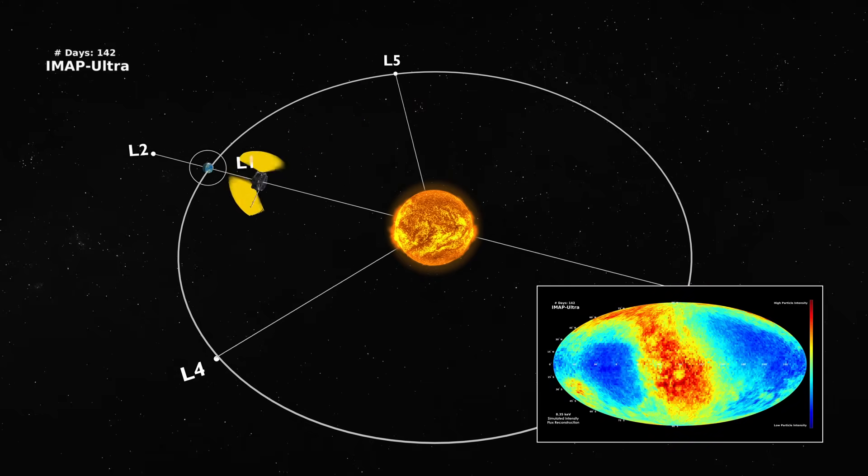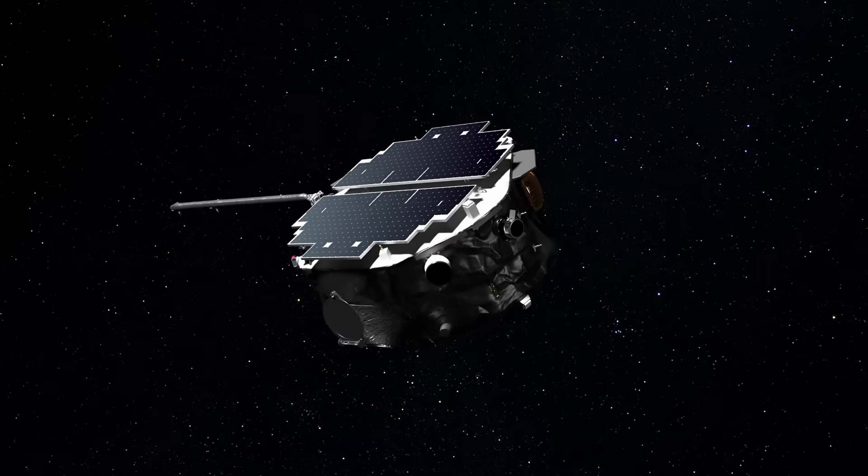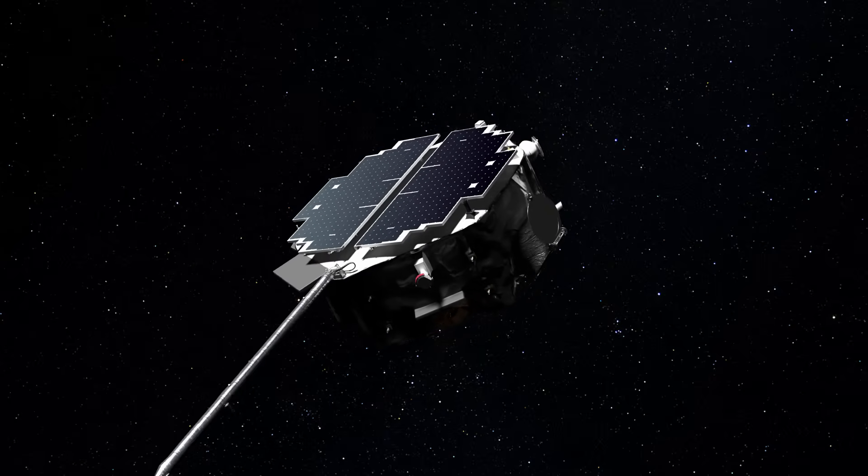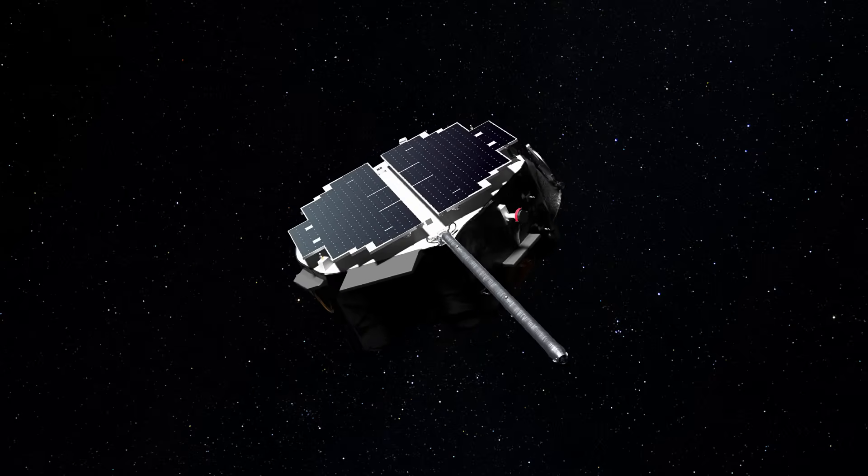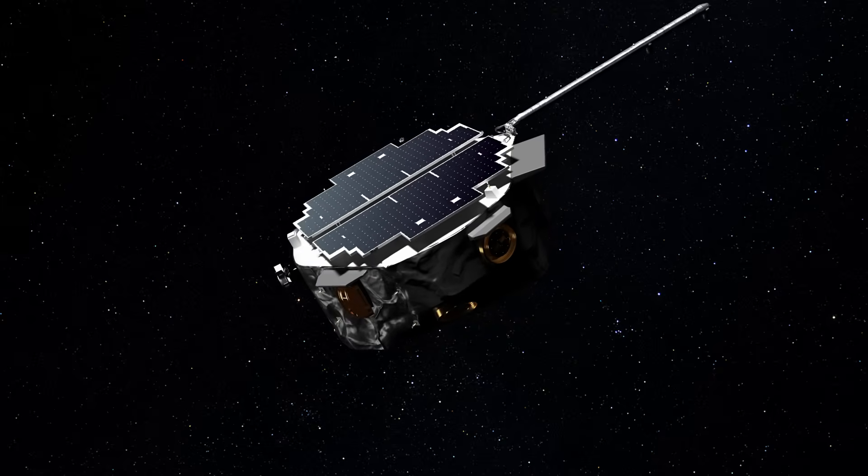Unlike the single points crossed by the Voyagers, IMAP will map the heliopause remotely to create a global picture of the interactions at the boundary. Its advanced instruments will study in detail how the solar wind interacts with the interstellar medium, how magnetic reconnection occurs, and how particles are accelerated in this region.